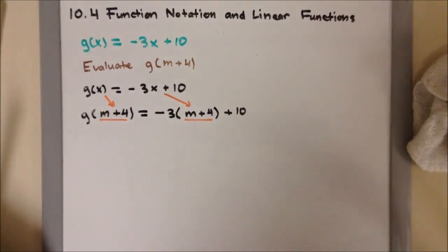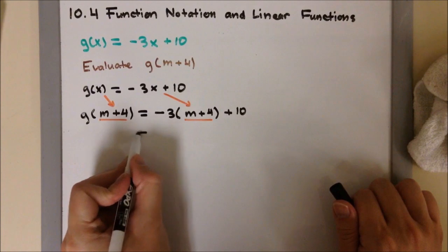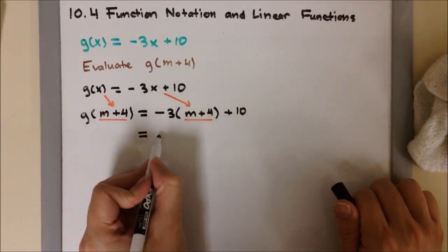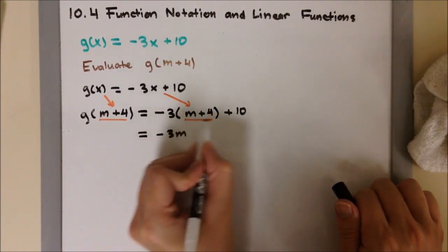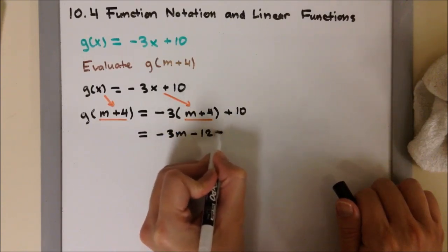So after that, I'm going to distribute my negative 3. So negative 3 times m is negative 3m. Negative 3 times positive 4 will be negative 12. And then bring down the plus 10.